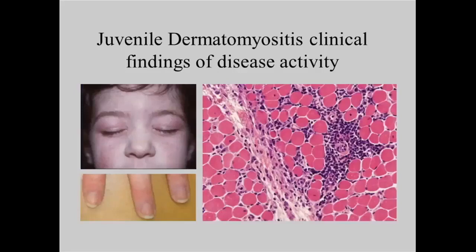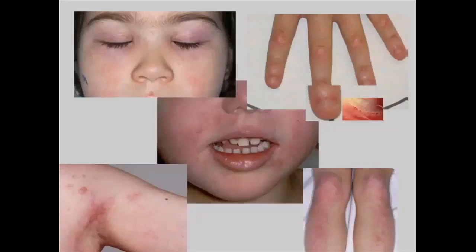Children with juvenile dermatomyositis are the primary group I'm going to be talking about today. Juvenile dermatomyositis is the primary form of myositis that children get, even though there are other forms of it, and some of this is applicable to those as well. These children have some very classic rashes that we describe — features that we can see that make us concerned about or are actually diagnostic of juvenile dermatomyositis.